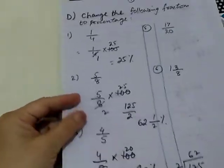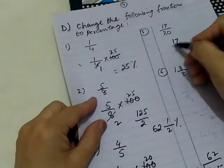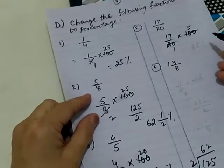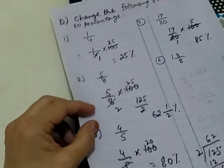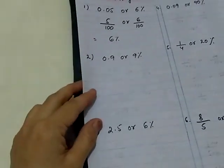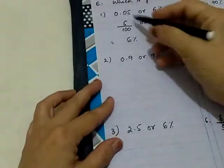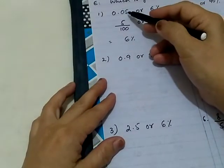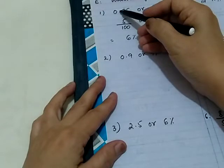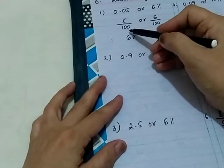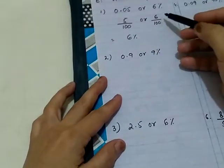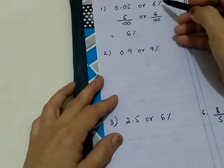17 upon 20 multiplied by 100: 20 ones are 20, 20 fives are 100, so 17 times 5 is 85 percent. Question E: Which is greater? 0.05 or 6 percent? 0.05 means 5 upon 100 and 6 percent means 6 upon 100. Same denominator: 6 upon 100 is greater, so 6 percent is greater.